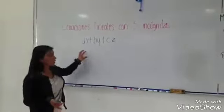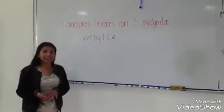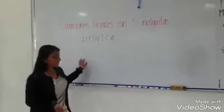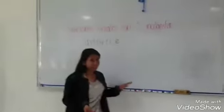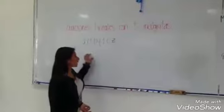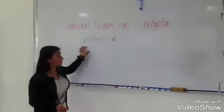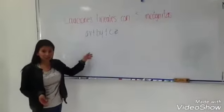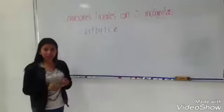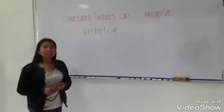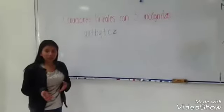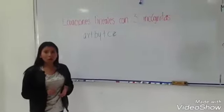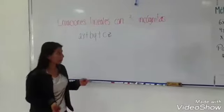Esta es la forma en la que se tiene que tener una ecuación lineal. Cuando se tienen tres incógnitas y cuando se tienen tres ecuaciones, por lo tanto en cada ecuación se puede sacar un valor de cada incógnita.